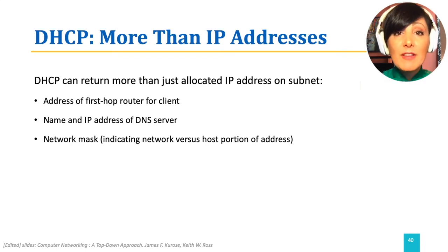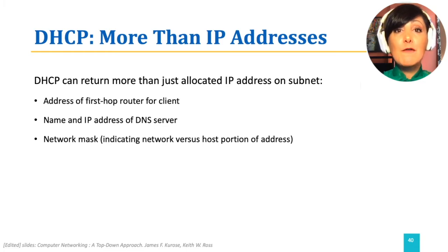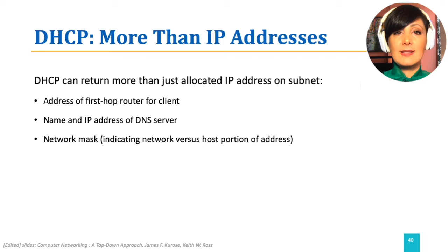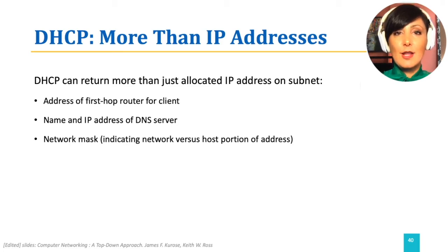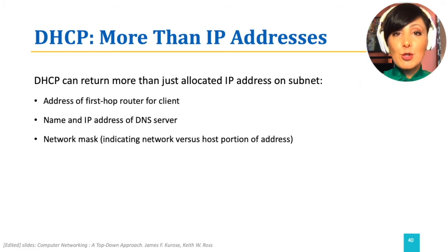DHCP provides more information than just allocated IP addresses. It returns the IP address of the first hub router for the client to connect to the internet. It can also return the name and IP address of the DNS server, and it returns the network mask. The configuration file at the DHCP server can also be used to provide links for automatic upgrades and plug-and-play software downloads from the network.